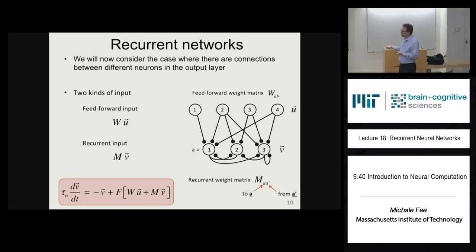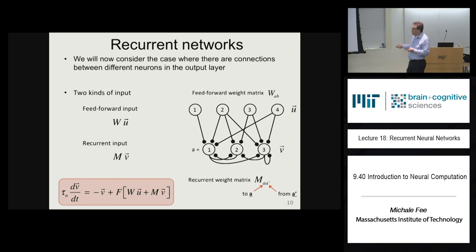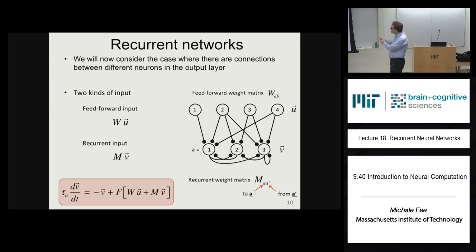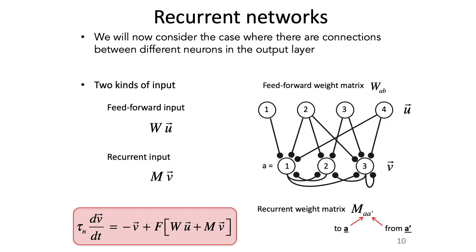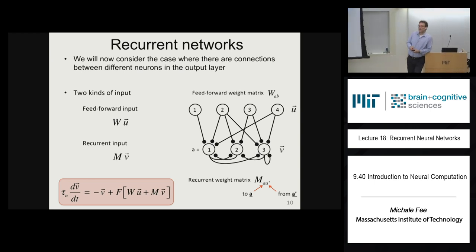Here is the equation that describes the time rate of change of firing rates in the output layer — just a first-order linear differential equation. The v_infinity is a nonlinear function of the net input to each neuron, where the net input has a contribution from feedforward inputs given by weight matrix W and a contribution from recurrent inputs given by weight matrix M.